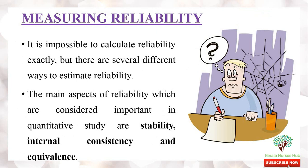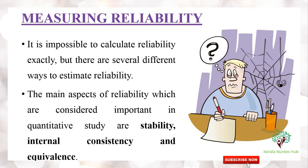It is impossible to calculate reliability exactly, but there are several different ways to estimate reliability in nursing research. The main aspects of reliability which are considered important in quantitative study are stability, internal consistency, and equivalence.